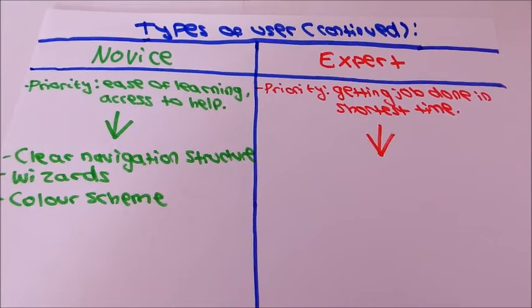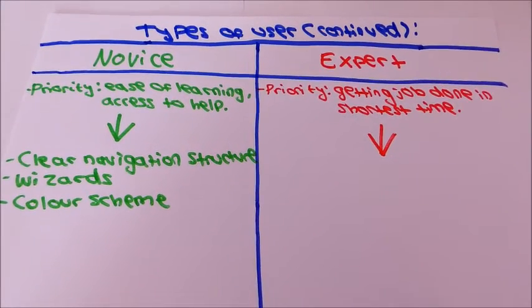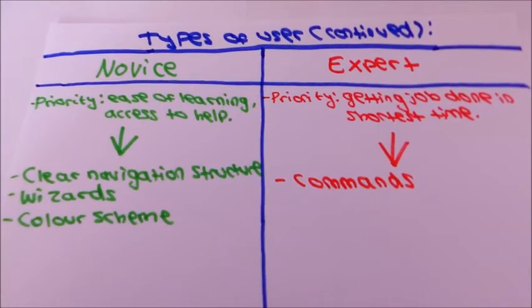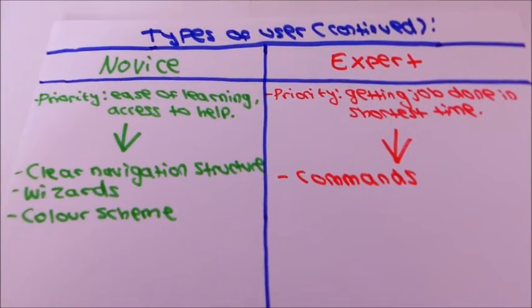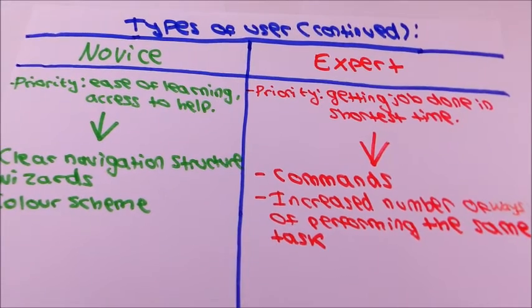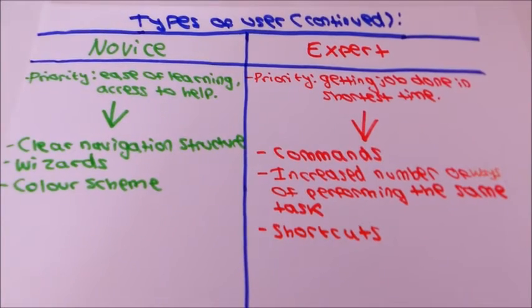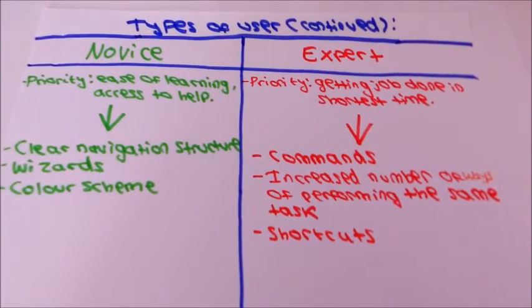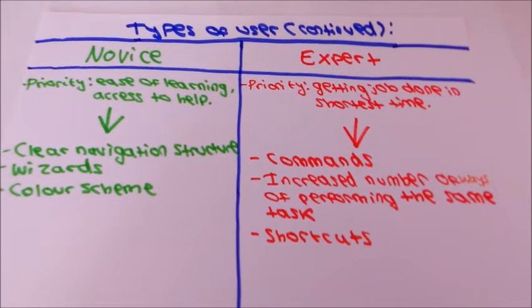For the expert users, the things that should be used are commands because they are quicker than using a GUI. There needs to be an increased number of ways of performing the same task. Finally, there needs to be shortcuts rather than having to go through a series of menus.